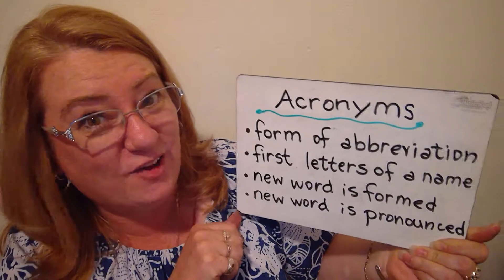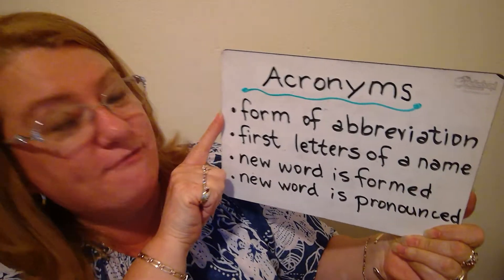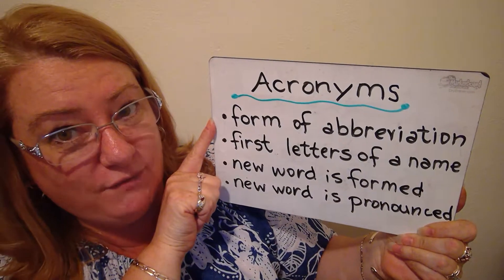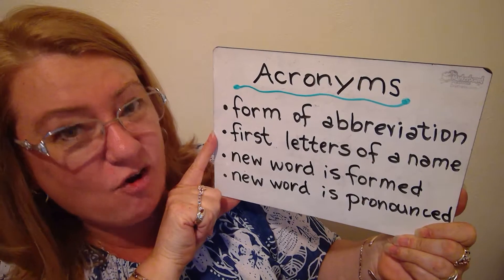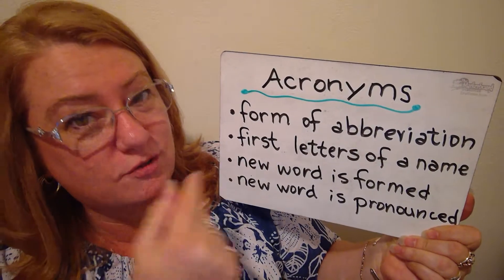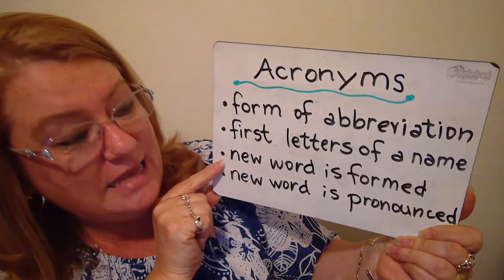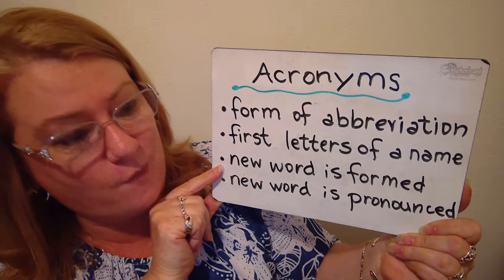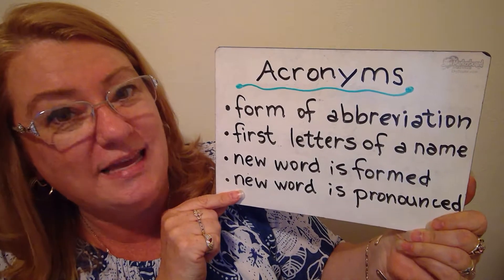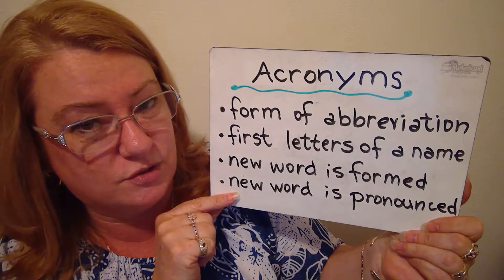Let's continue our lessons with acronyms. These are forms of abbreviations. It is the first letter of a name that's used to form the acronym. It does make a new word, so a new word is formed, and this new word is pronounced.